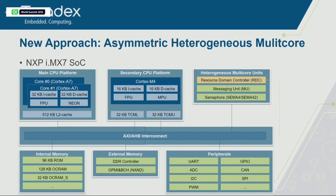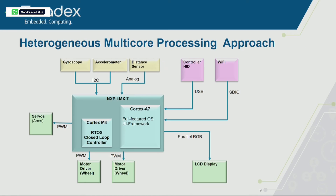Both cores can access all the peripherals and the main RAM — that's what this new heterogeneous multicore enables. With such a system you only need one board and connect everything to it. The architecture becomes more flexible: you can choose to control an HID device from the M4 core, or have the distance sensor controlled directly by the A7 core — you can change that decision without a hardware redesign.